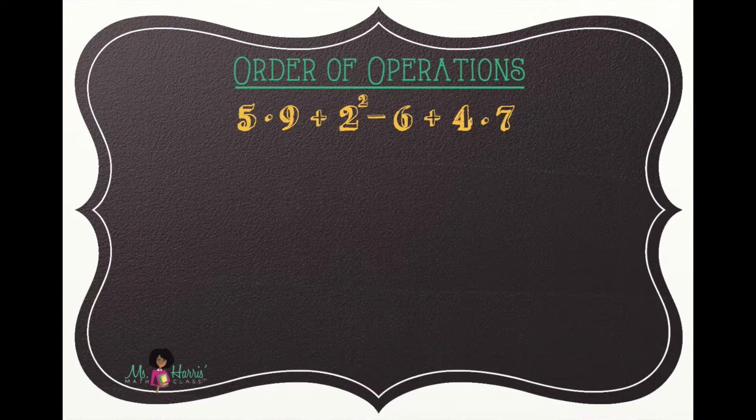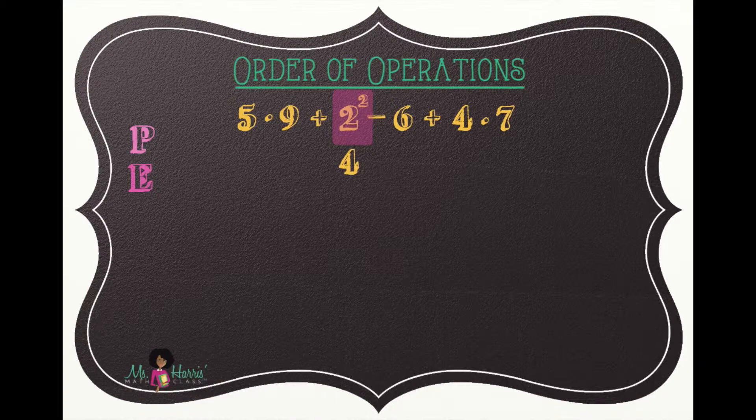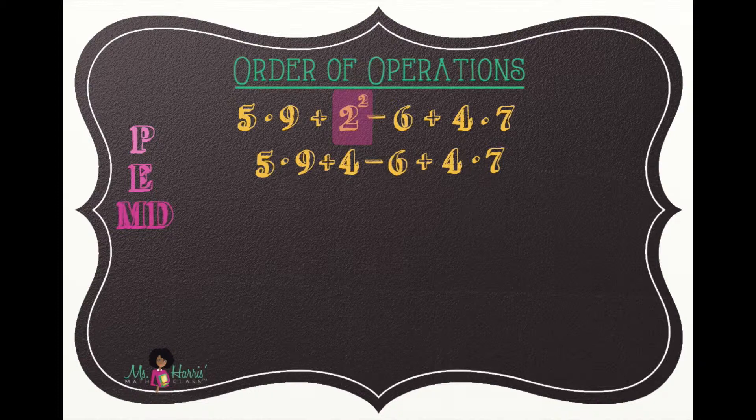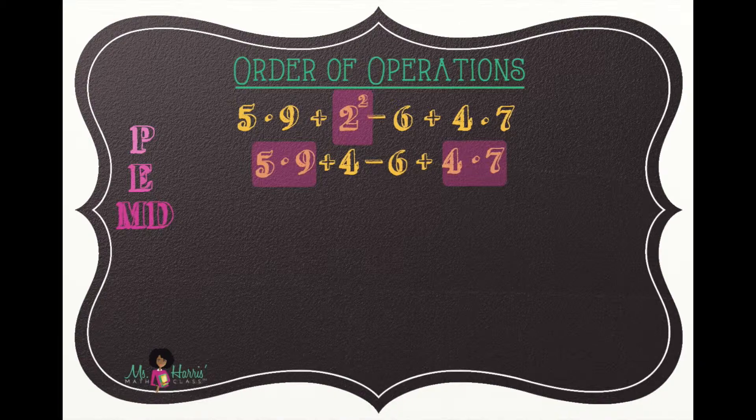We move through PEMDAS and pause at E for exponent, and highlight two squared or two to the second power, which is four. We then bring down the remaining numbers and operations. We move to multiplication and division and highlight five times nine and four times seven. We're going to highlight those at the same time because they don't have any numbers in common.